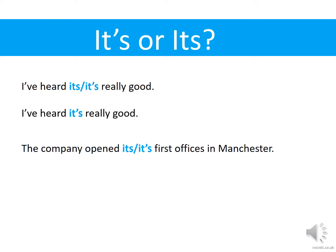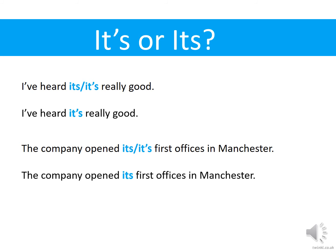'The company opened its or it's first offices in Manchester.' Is there any possession there? Who do the offices belong to? The offices belong to the company — those offices in Manchester are the company's offices. So it won't have the apostrophe. 'The company opened its first offices in Manchester.' Let's check: 'The company opened it is first offices in Manchester' or 'it has first offices' — they don't make sense. So we don't need the apostrophe.